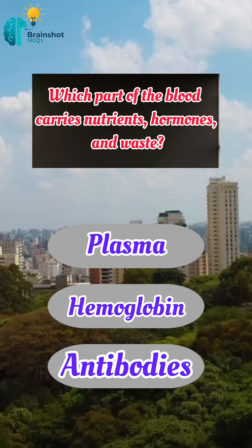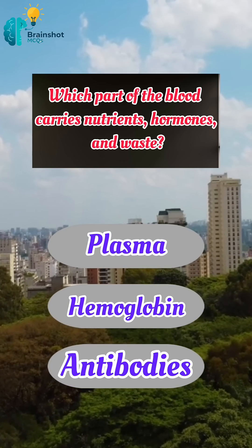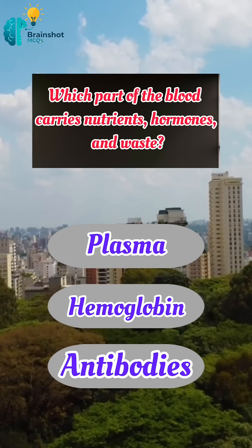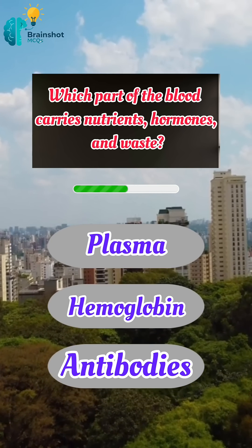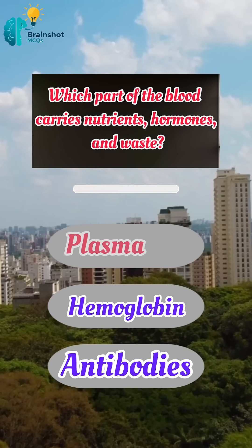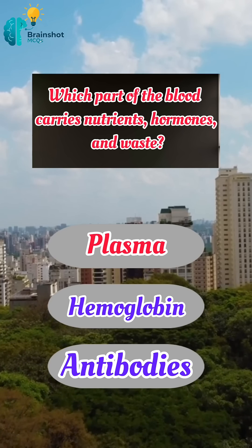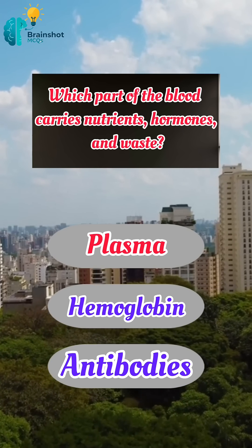Which part of the blood carries nutrients, hormones, and waste? Correct answer: A, plasma.